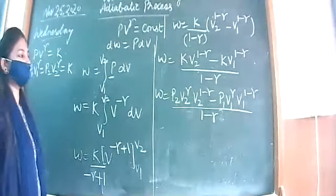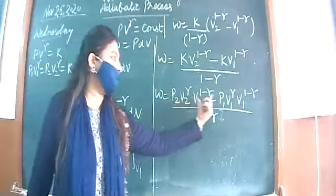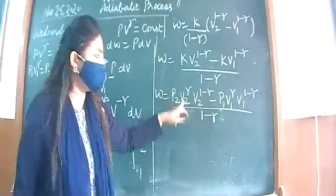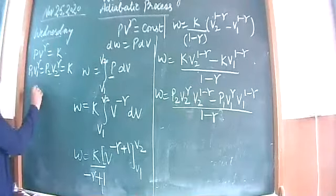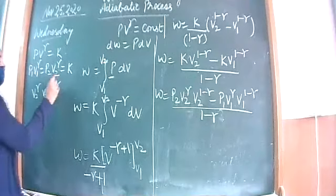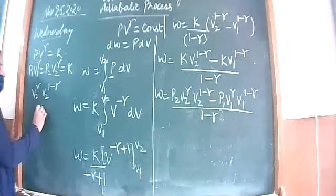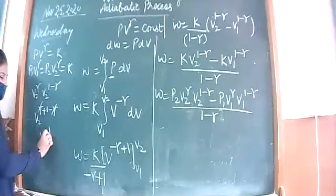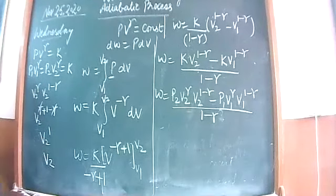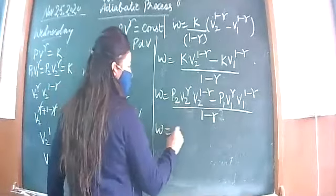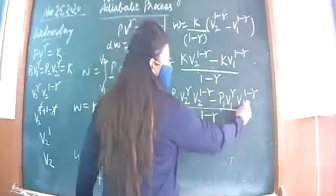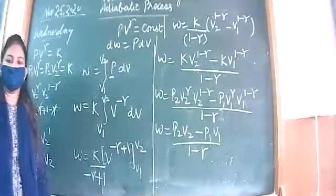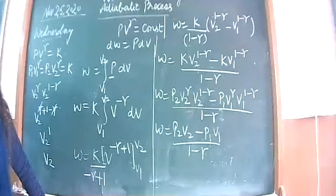Substituting k and solving: V2 raised to gamma times V2 raised to 1 minus gamma — bases are same so powers get added, gamma cancels, giving just V2. Same way we get only V1 on the other side. So after substituting k, our expression gets greatly simplified.